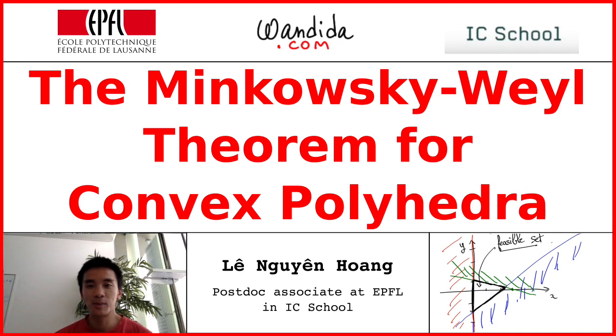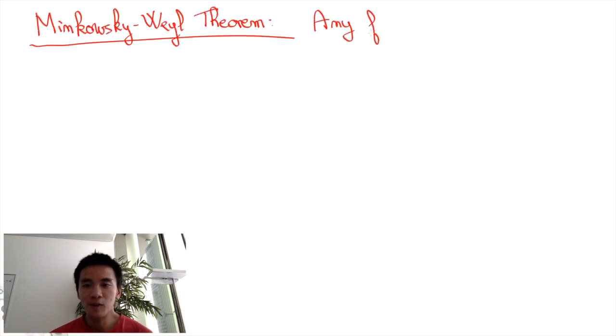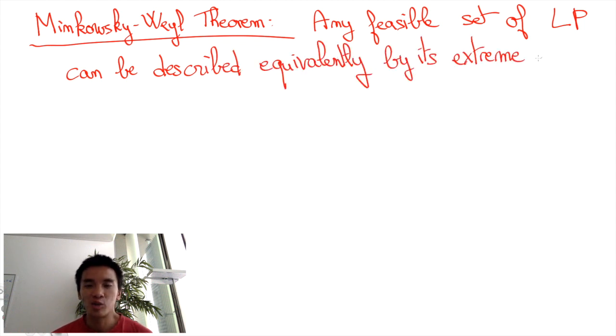In this video, we will state and explain the Minkowski-Weyl Theorem for convex polyhedra. Basically, the theorem asserts that any feasible set of a linear program can be described equivalently by its extreme points and a finite set of directions.